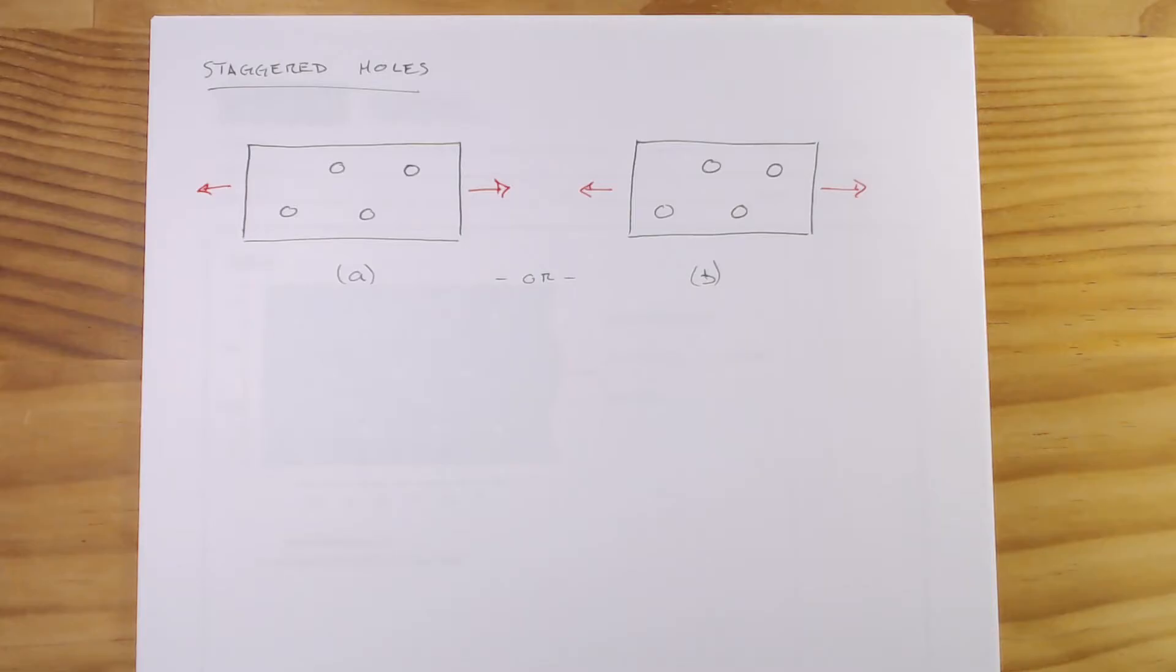You might have to stagger your holes in order to get the same number of fasteners in a smaller area. And if we look at that, we're always worried about what are the failure planes, and with a staggered hole we could have a couple options. So I've got the same, nominally the same setup drawn here for case A and case B.